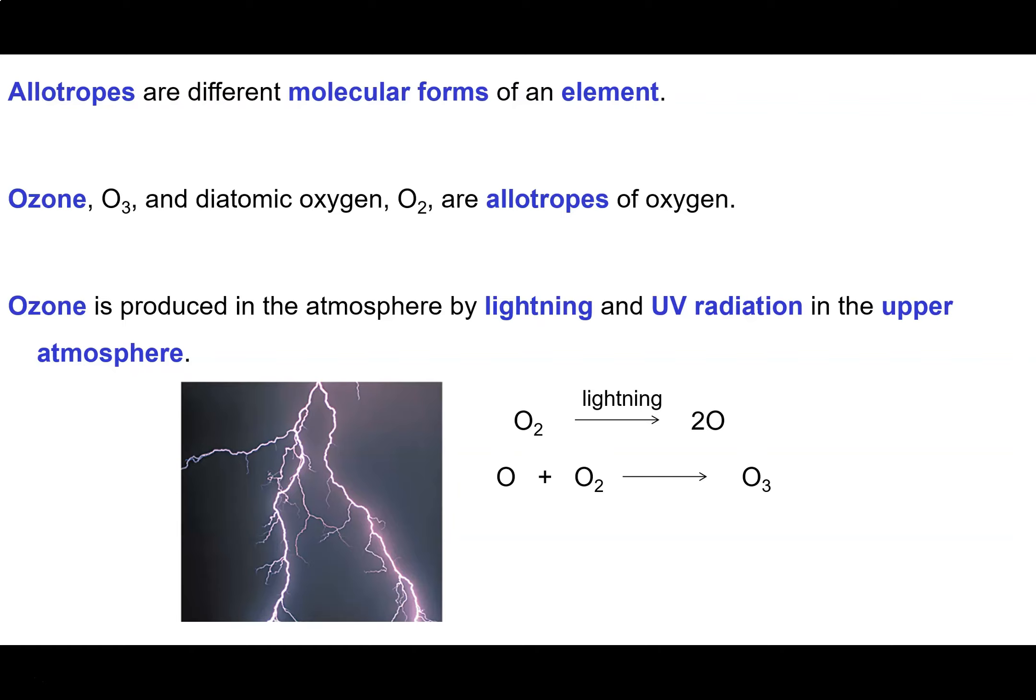Allotropes are different molecular forms of an element. Examples could be things like the diamond form of carbon versus graphite. They're both made up 100% of carbon atoms, but they're different molecular forms of the element. And there are other examples for different elements.